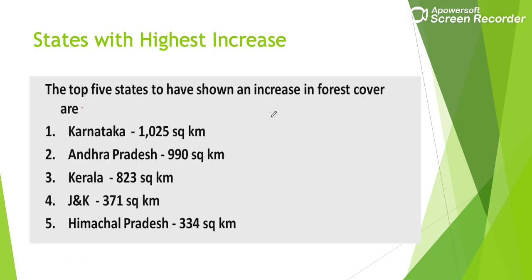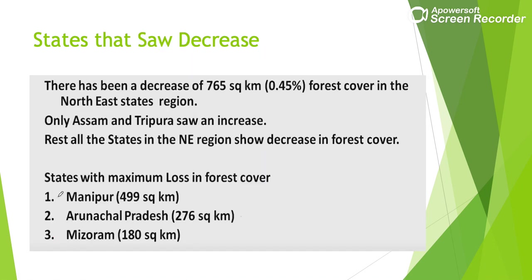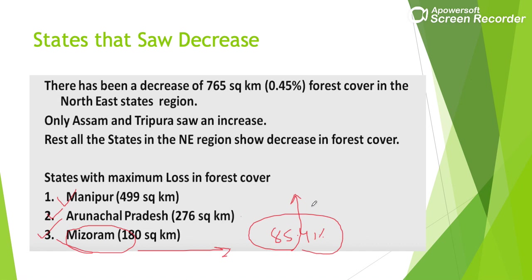States that showed the highest increase in forest cover over the last two years: Karnataka (around 1,025 sq km increase), followed by Andhra Pradesh, Kerala, Jammu and Kashmir, and Himachal Pradesh. On the other hand, states where forest cover decreased include Manipur, Arunachal Pradesh, and Mizoram — despite Mizoram having 85.41% of its area as forest, it showed a slight decrease.